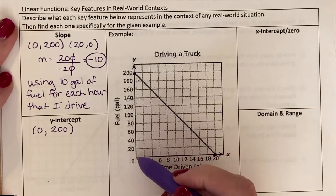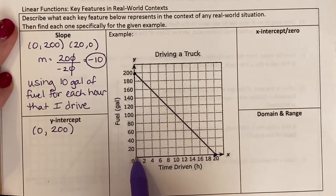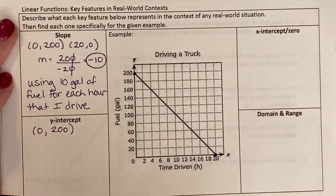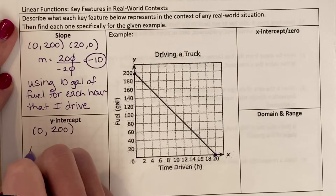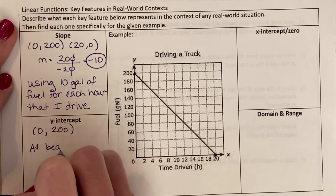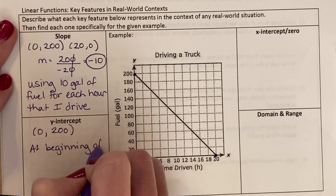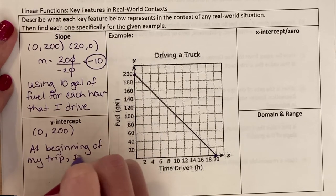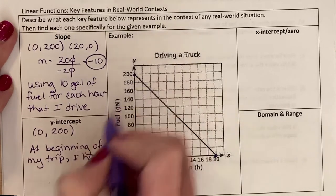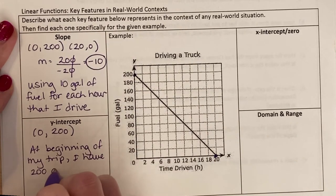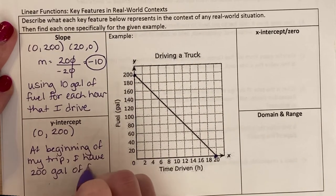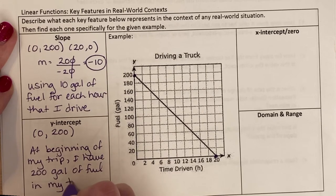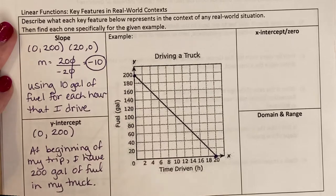That means when the hour is 0, when I haven't started my trip, I have 200 gallons. So at the beginning of my trip, before I start, I have 200 gallons in my truck. That's a lot of fuel. That's probably a really big truck.